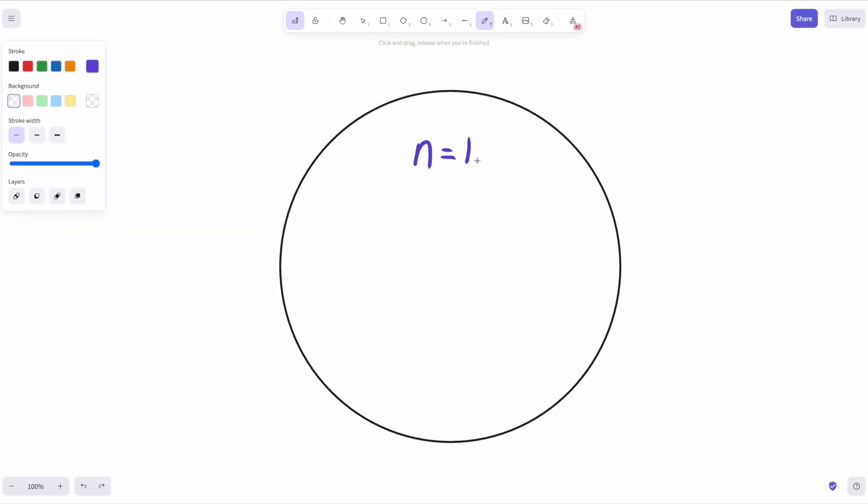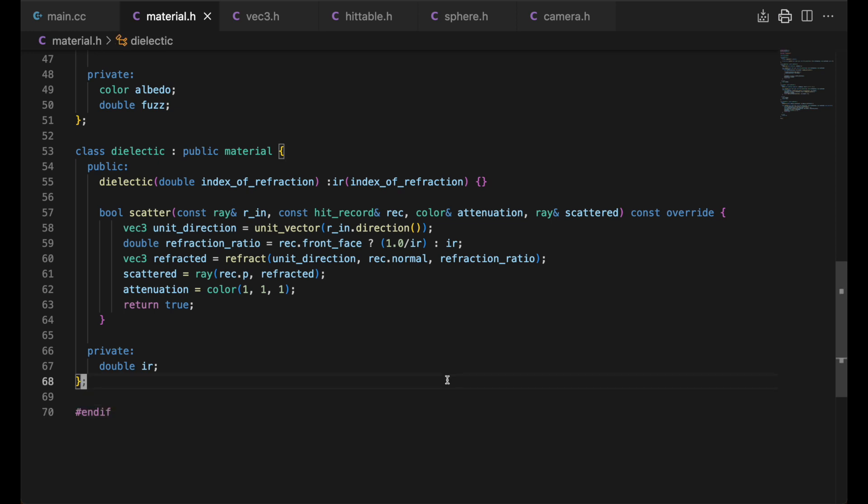Finally, recall that to do our refraction calculation, we need a ratio of the indexes of refraction, and that a dielectric is defined by its relative index. For incident rays on the sphere, this ratio is 1 over the relative index. For rays exiting the sphere, it's just the value of the relative index itself. We'll use the front face property of the hit to determine which one to use. We can now implement our dielectric material class. It takes one argument, its relative index of refraction. Here we use the front face property from the hit record to determine the refraction ratio. We find the refracted vector, set the scattered and attenuation output parameters, note we are not attenuating at all, and return true.